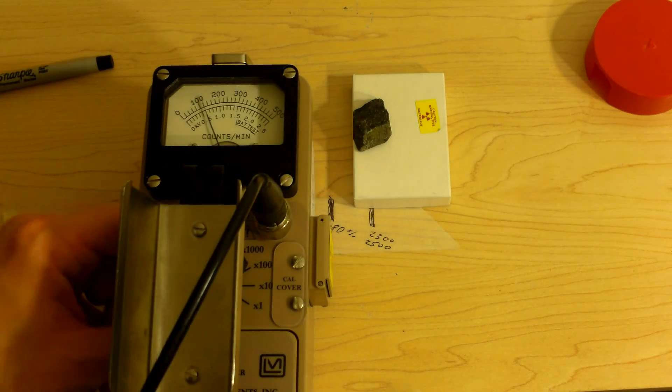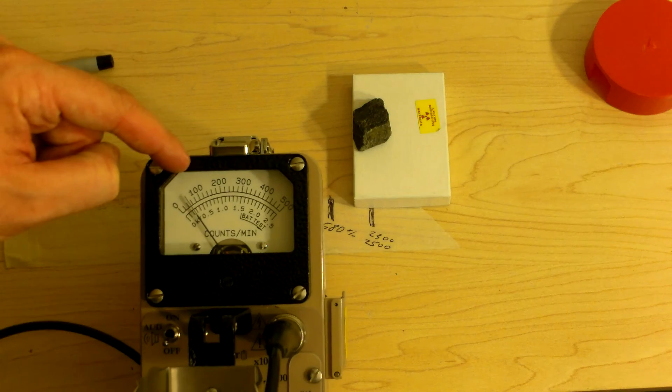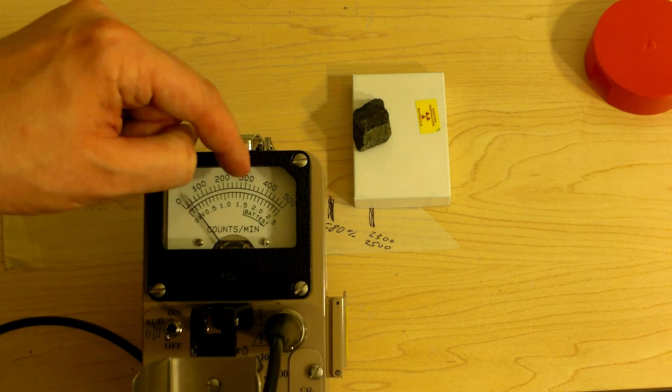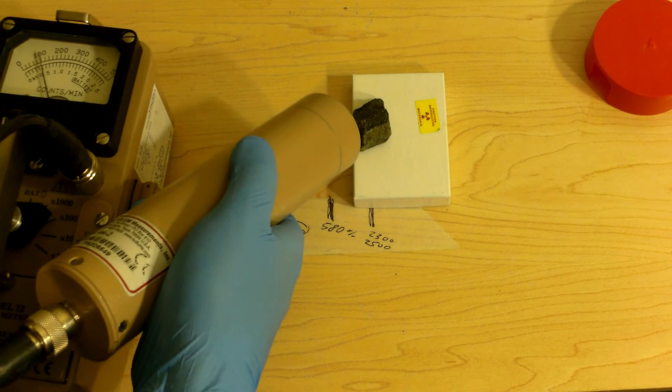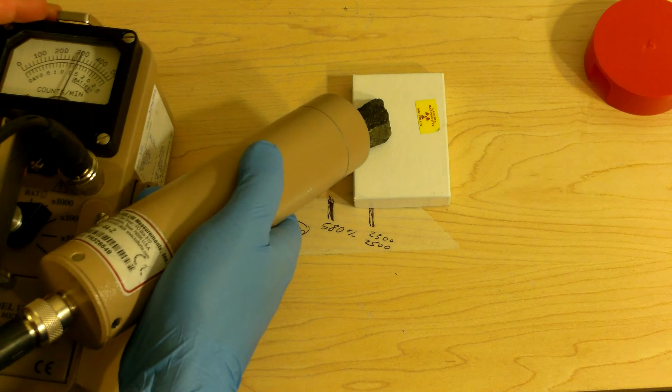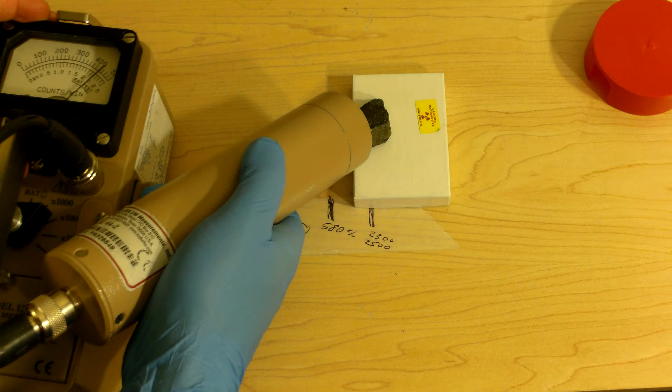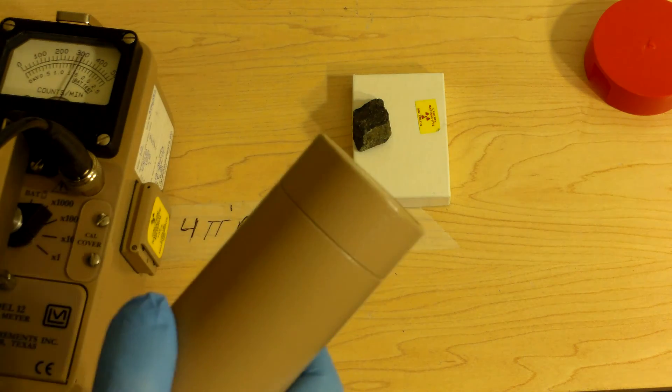All right, we're going to switch this Model 12 to times 100. So, the scale you see on it right now will be 0, 10,000, 20,000, 30,000, 40,000, 50,000. And just to check, I think it goes off the scale. Yeah, it goes off the scale, but that's okay.